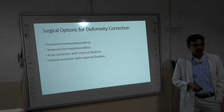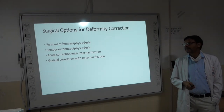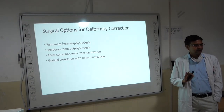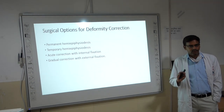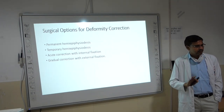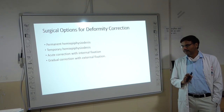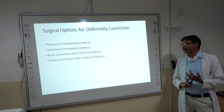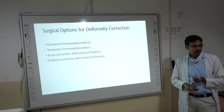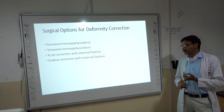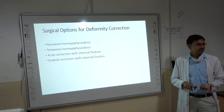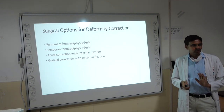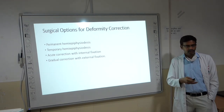There are four surgical options for correction: first, permanent hemi-epiphysiodesis; second, temporary hemi-epiphysiodesis (growth modulation); third, acute correction with internal fixation; and fourth, gradual correction with external fixation devices. These four approaches can be used for correction of genu varum or valgum — noting that hemi-epiphysiodesis options apply only to children with open physes.